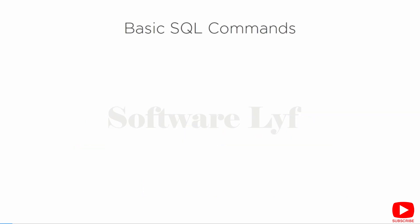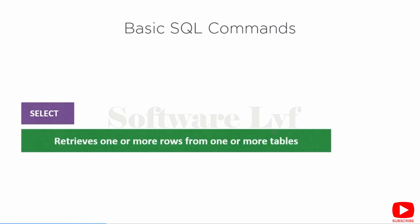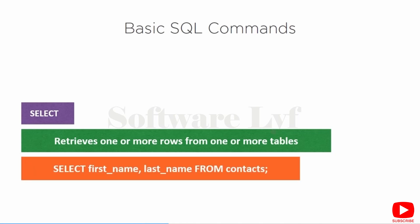All of our SQL statements can be broken down this way, even the more complex ones. In complex ones, we may also have multiple clauses, multiple keywords, and multiple identifiers. I'm going to cover four basic SQL commands in this course. The first is the SELECT command, which allows you to get data — to retrieve one or more rows from one or more tables. For example, SELECT first_name, last_name FROM contacts gives us those two columns. The select clause and from clause together say: give us the first name and last name columns from the table named contacts.